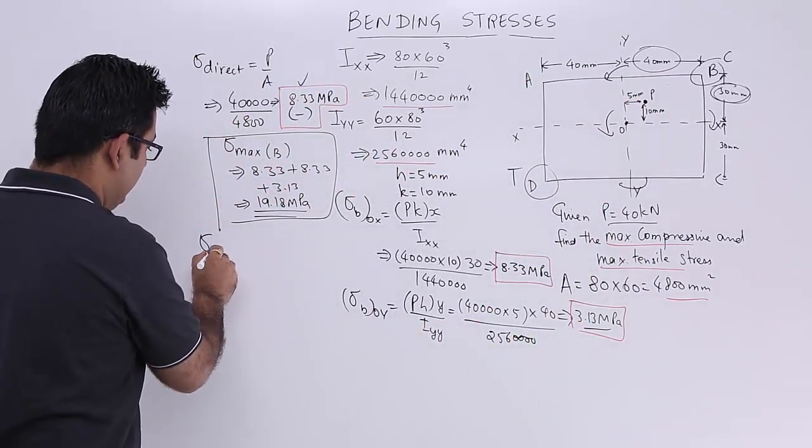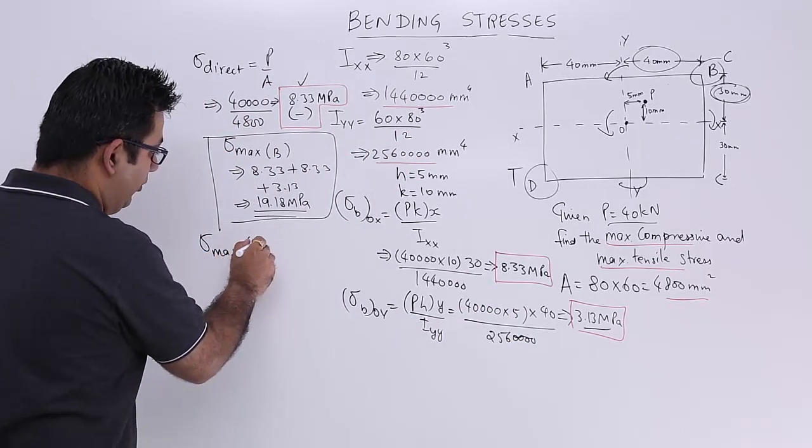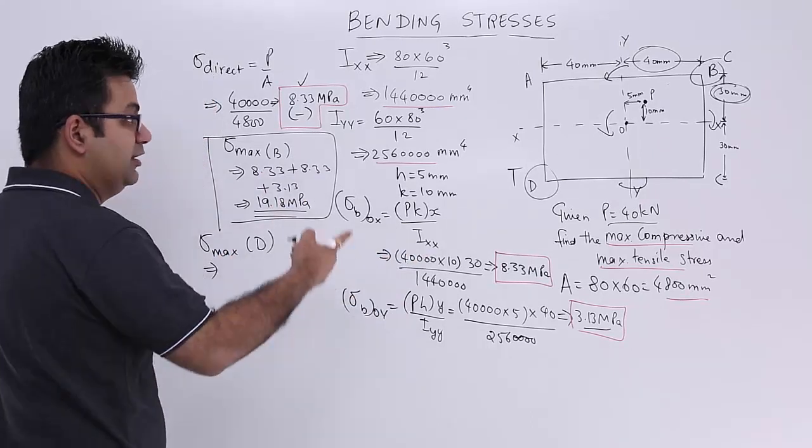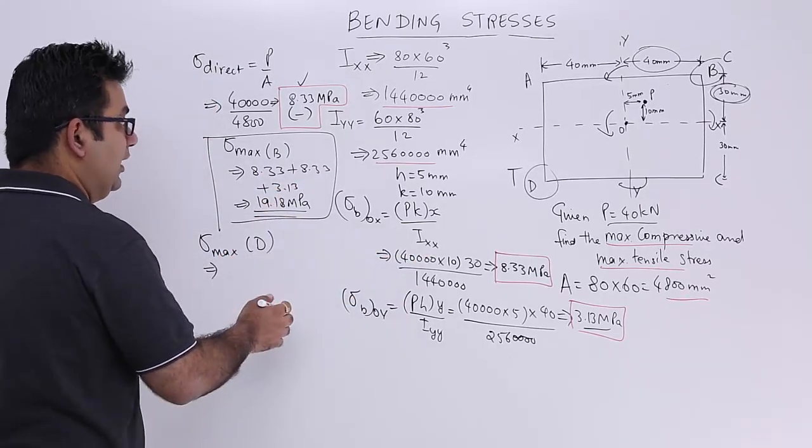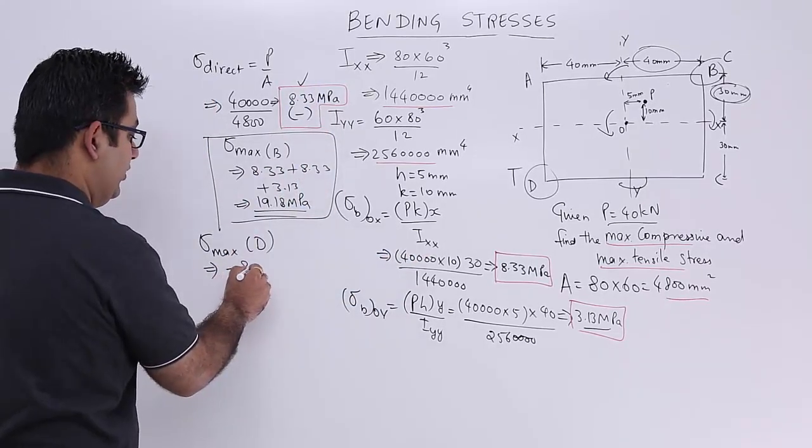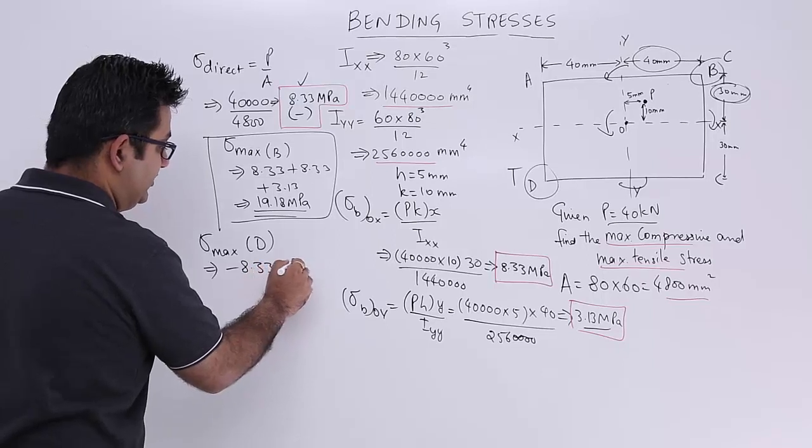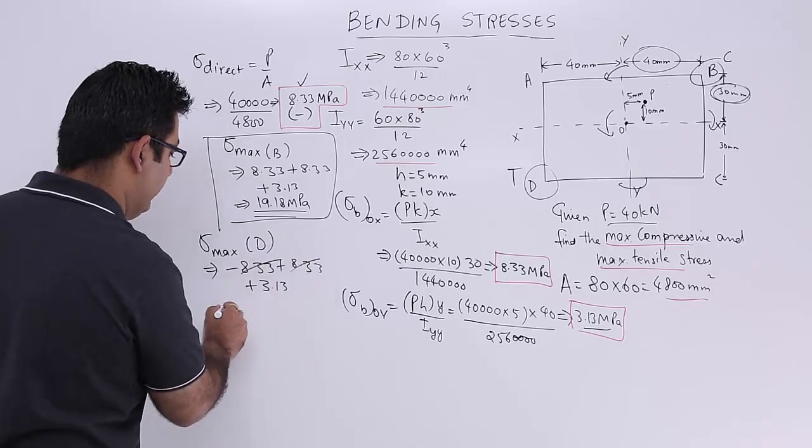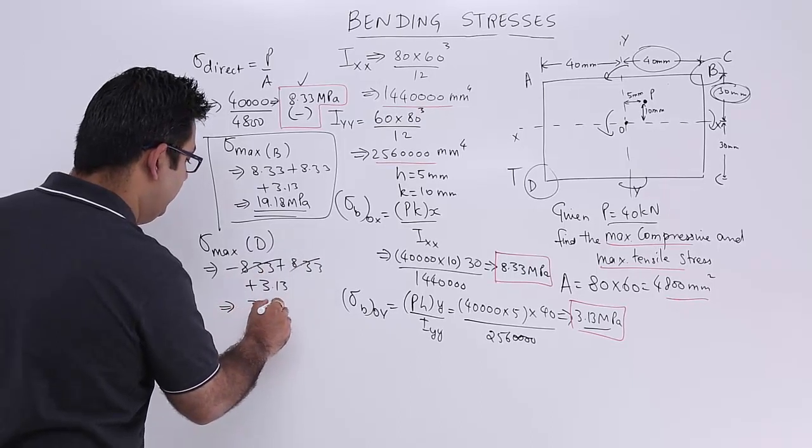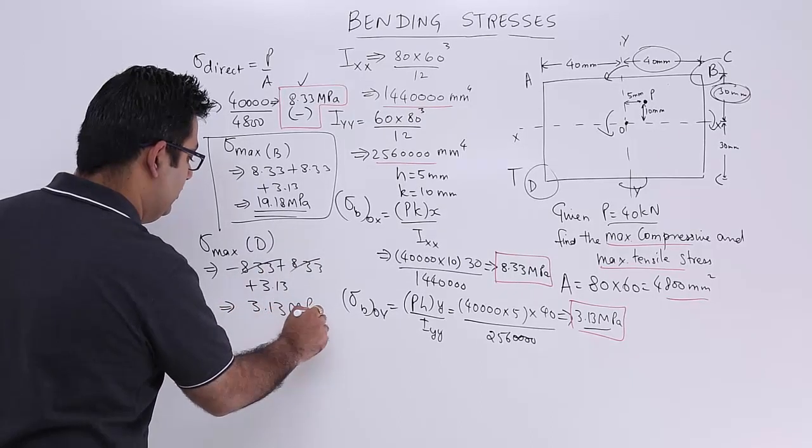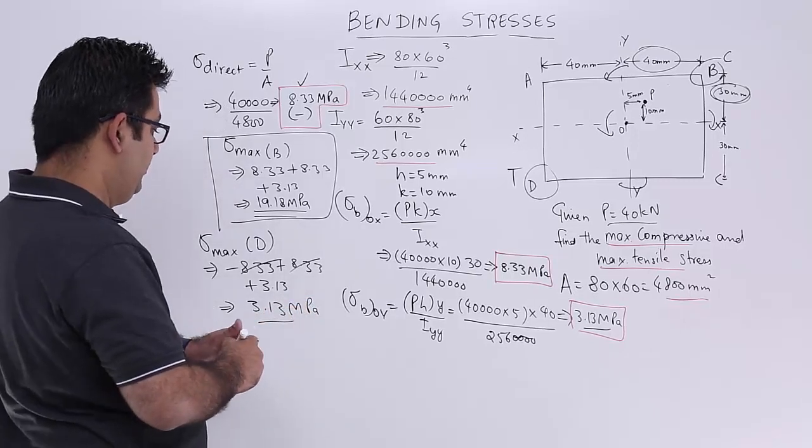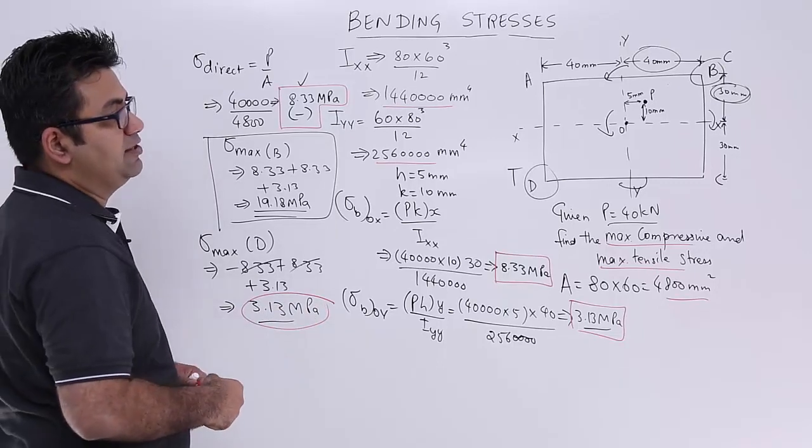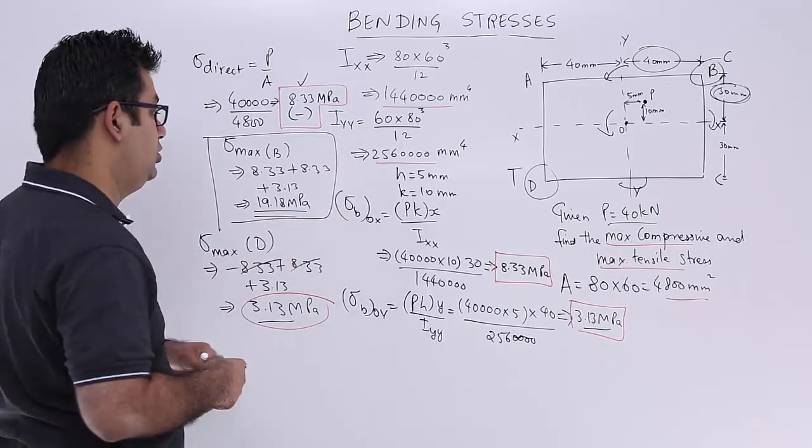Similarly, sigma max at point D. Now because there will be tension in this quadrant, you will have this as a negative stress plus 8.33 plus 3.13. So you can subtract this off. You will only get 3.13 MPa. So now you can see that the rule that we are stating, that the maximum stress will only occur at B, is true.